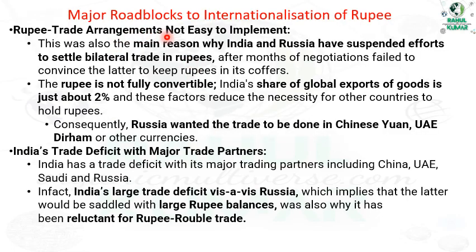What are the major roadblocks of internationalization of the Rupee? First, Rupee trade agreements are not easy to implement. This was also the main reason why India and Russia suspended efforts to settle bilateral trade in Rupees, after months of negotiation failed to convince Russia to keep Rupees in its coffers. The Rupee is not fully convertible, and India's share of global exports of goods is just about 2%, which reduces the necessity for other countries to hold Rupees. Consequently, Russia wanted trade to be done in Chinese Yuan, UAE Dirham or other currencies.